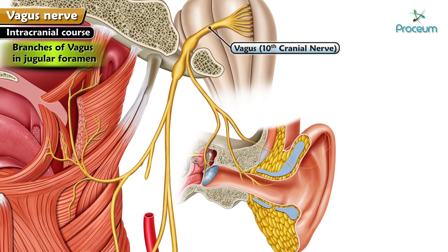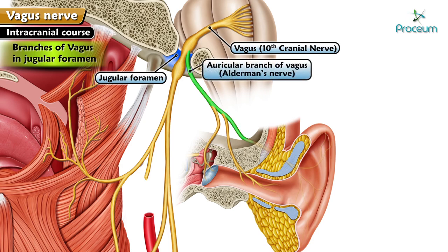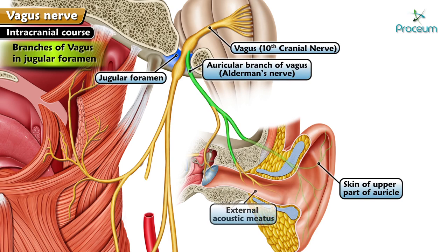Within the jugular foramen, the auricular branch of the vagus, also known as Alderman's nerve, is distributed to the skin of the upper part of the auricle, the external acoustic meatus, and the posterior inferior part of the tympanic membrane.